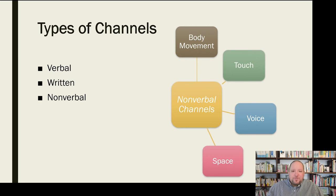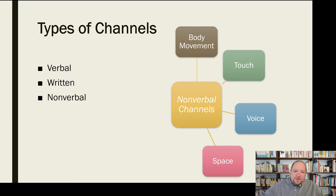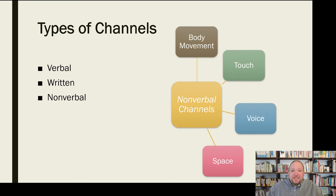We also use space in different ways — how closely we're standing to somebody. We have our personal bubble, which is only for people who are very close to us, and then different distances we'd like to have people at when communicating nonverbally. If we don't know someone as well, we're likely to stand back a little further, both for psychological comfort and as a sign of respect. This is a highly cultural thing, but all cultures use space to communicate nonverbally.